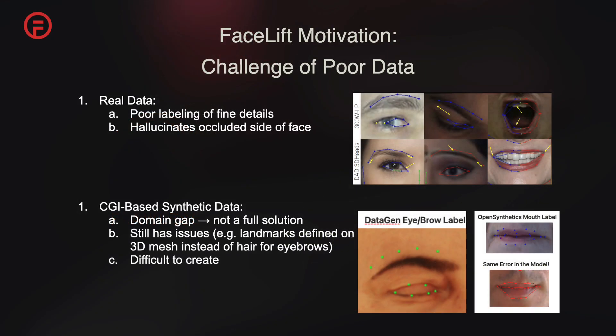One of the primary challenges in 3D facial landmark localization is poor quality data. In the real domain, datasets are often semi-automatically labeled, lacking fine-scale details and requiring hallucination of information about occluded face regions, which often leads to incorrect ground truth. In the synthetic domain, we face issues such as the well-known domain gap, as well as inaccuracies in landmark positioning due to discrepancies between the albedo space or hair and the mesh, particularly noticeable in features like the eyebrows and lips.